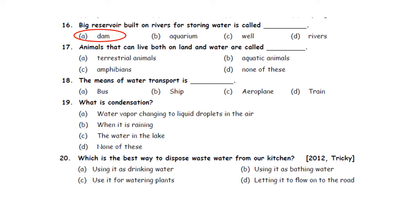Question seventeen: Animals that can live both on land and water are called dash. A. Terrestrial animals. B. Aquatic animals. C. Amphibians. D. None of these. Animals that live only on land are known as terrestrial animals. Animals that live only in water are known as aquatic animals. Animals that can live both on land and water are called amphibians — for example, frog and hippo. So option C is the correct answer.